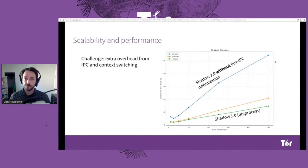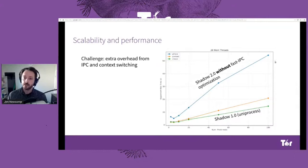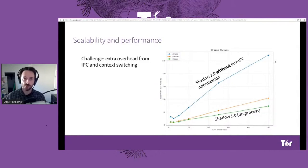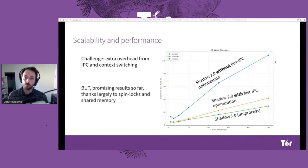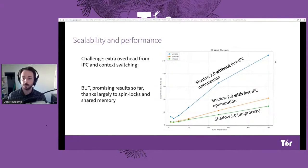The challenge with this new architecture is that there are some extra overheads from interprocess communication and context switching, and some initial results were quite a bit slower than the original Shadow. However, we've been working on optimizing this — in particular using techniques like spin locks and shared memory — and we've been able to close this gap quite a bit.